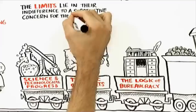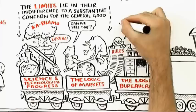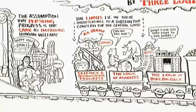And the limits of the logic of science and of markets lie in their indifference to a substantive concern for the general good. If something can be discovered and developed, it should be discovered and developed. If something can be sold, then it should be sold. And the problem for bureaucracy is a tendency to put the rationality of rules above the rationality of ends. And so it's in this context that the 21st century Enlightenment project demands a reassertion of the fundamentally ethical dimension of humanism.